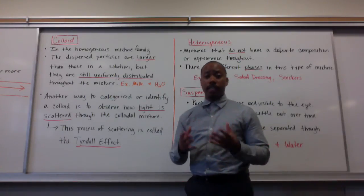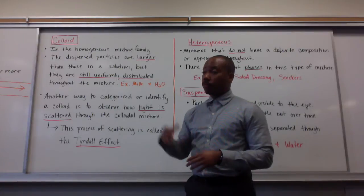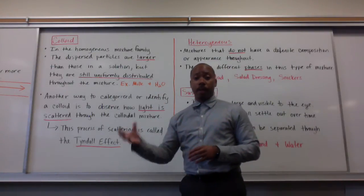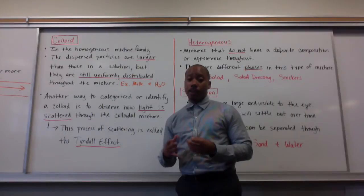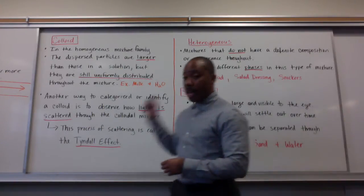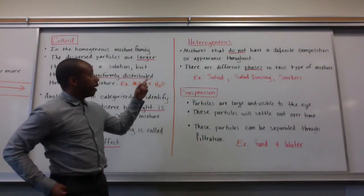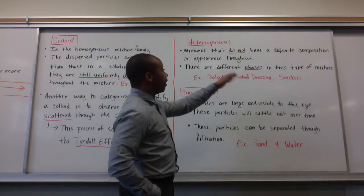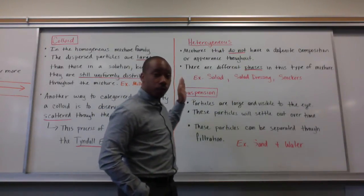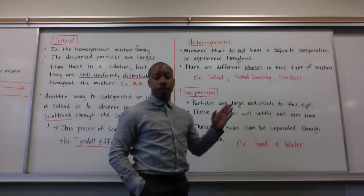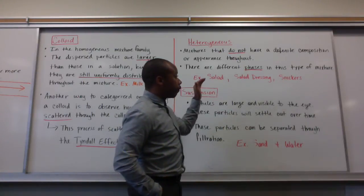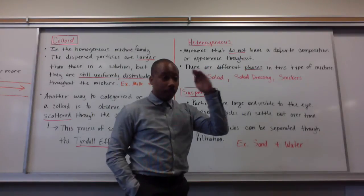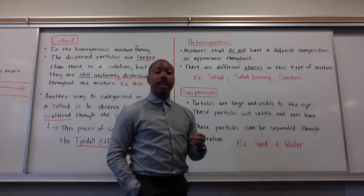Those are the different types of homogeneous mixtures — read up on them, see where they're similar, see where they're different. Now, the other type of mixture is a heterogeneous mixture. In a heterogeneous mixture, it's a mixture that does not have a uniform and definite composition or appearance throughout. Meaning there are different phases and visibly different parts that you can see.